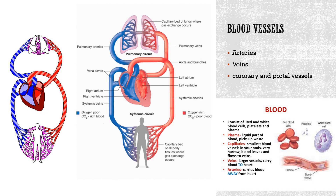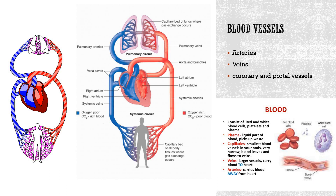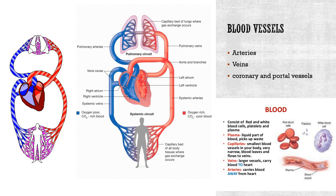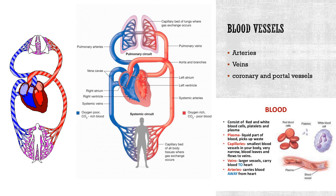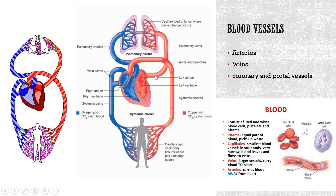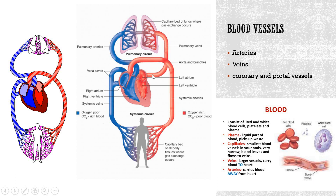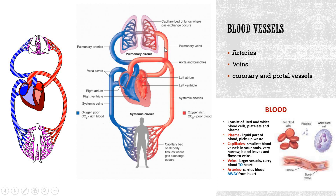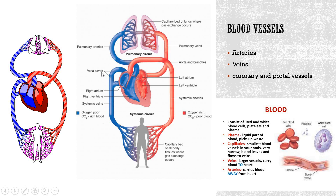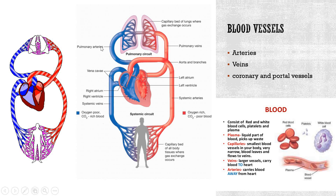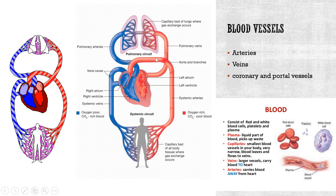The group of blood vessels — arteries, veins, and capillaries — helps keep the heart, lungs and other parts of the body connected. As you can see in the figure, pulmonary veins carry oxygen-rich blood from the lungs to the heart. The aorta and its branches carry oxygen-rich blood from the heart to other parts of the body. The vena cava carries oxygen-poor blood from the body to the heart, and pulmonary arteries carry oxygen-poor blood from the heart to the lungs.